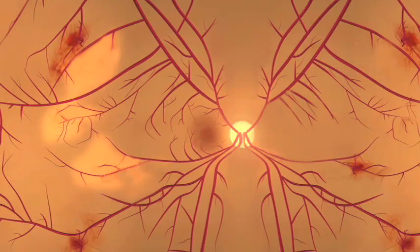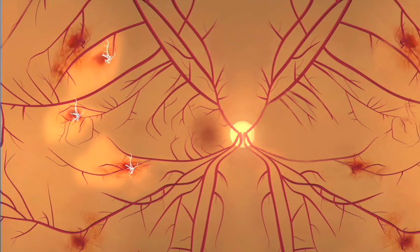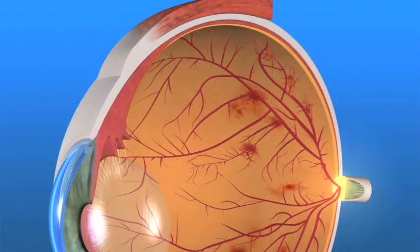With PDR, many blood vessels in the retina close, preventing adequate blood flow to the retina. The retina responds to this problem by trying to grow new blood vessels. However, these new abnormal vessels do not provide proper blood flow. They can also bleed as well as lead to scar tissue, which may cause the retina to wrinkle or even detach.